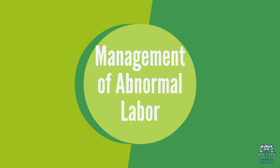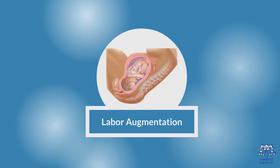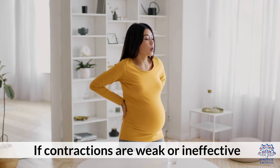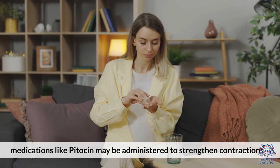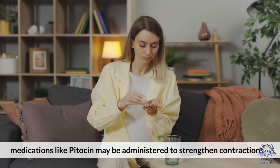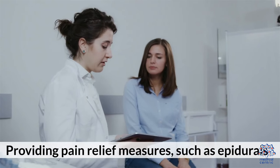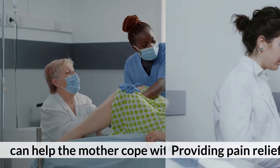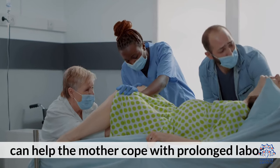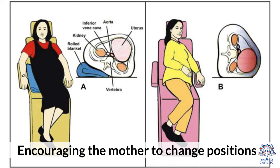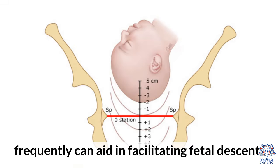Management of abnormal labor. 1. Labor augmentation: if contractions are weak or ineffective, medications like Pitocin may be administered to strengthen contractions. 2. Pain management: providing pain relief measures such as epidurals can help the mother cope with prolonged labor. 3. Positioning: encouraging the mother to change positions frequently can aid in facilitating fetal descent.